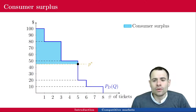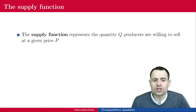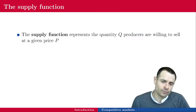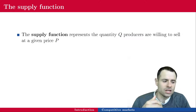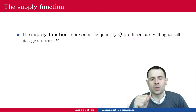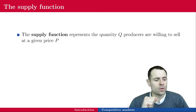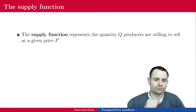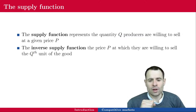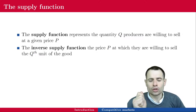Let's now go to the second part of the market: the supply function. The supply function represents the quantity Q producers are willing to sell at a given price P. Whether they have market power or not, the supply function describes how many units they are willing to produce and sell at price P. Equivalently, the inverse supply function represents the price they are willing to sell for the Qth or Qth-plus-one unit of the good.